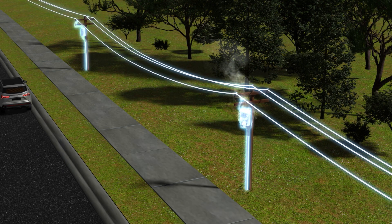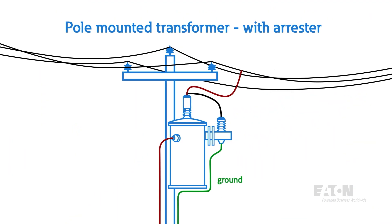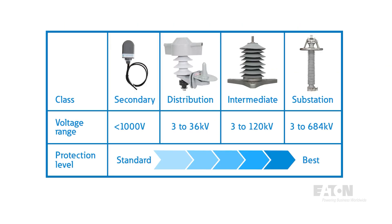These extremely high voltages can propagate through power lines and damage equipment. However, surge arrestors can be placed right next to equipment to help filter out these transient overvoltage conditions. There are four different classes of arrestors dictated by IEEE: secondary, distribution, intermediate, and substation. This just determines the range of voltage ratings as well as the protection level.